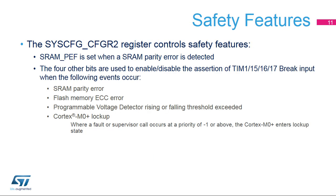The SYSCFG CFGR2 register contains the control and status bits linked to safety and robustness. Four control bits direct certain error detection events to the timer's break inputs, allowing timer outputs to be placed in a known state during an application crash. Once programmed, the connection is locked until the next system reset.